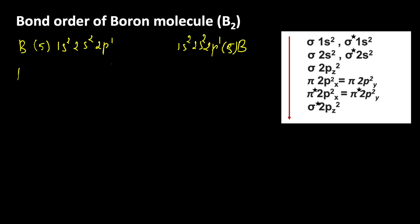Since boron molecule contains two boron atoms, there must be the presence of 10 electrons.